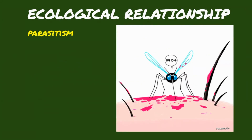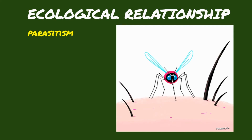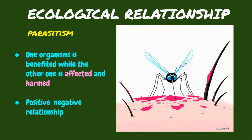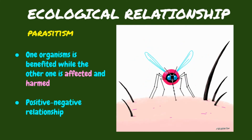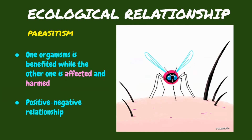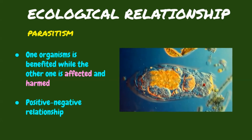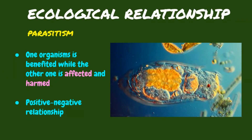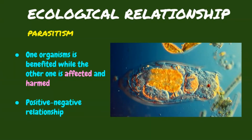Parasitism is a positive-negative relationship, where one organism is benefited while the other one is affected and harmed. The organism that benefits from the relationship is called the parasite, which is usually smaller than the other organism or the host. The mosquito is a parasite that lives outside the body of the host. It sucks blood from the skin of animals or humans, which are the host. There are some parasites that can cause diseases. Bacteria and other microscopic organisms live inside the body of the host and cause diseases like pneumonia and malaria.